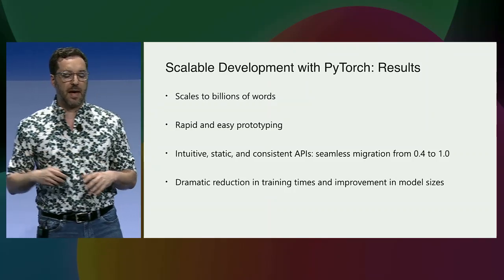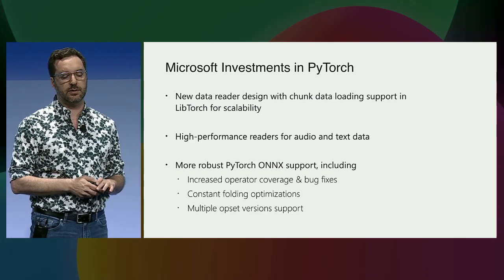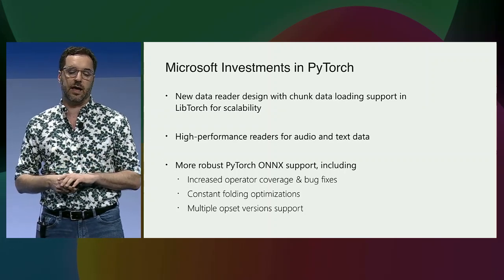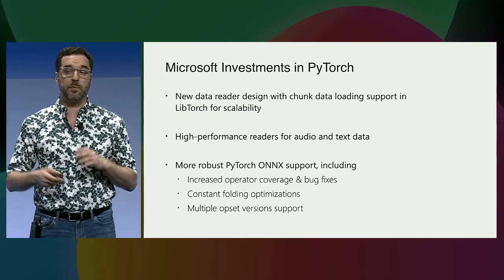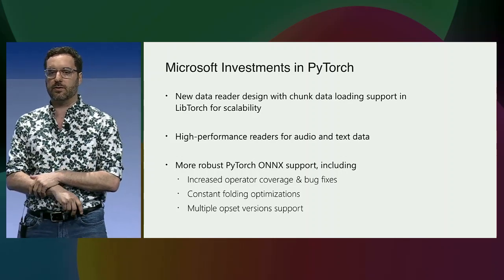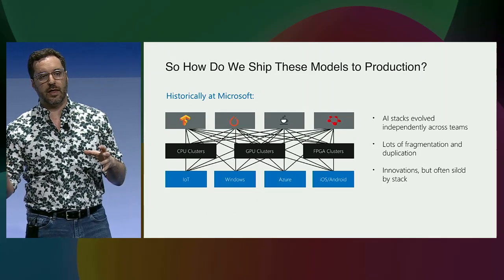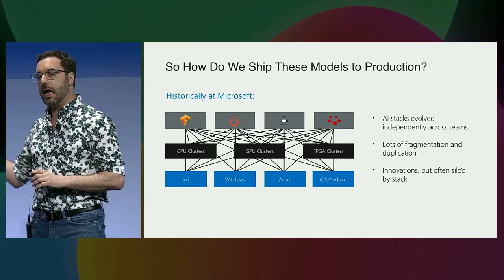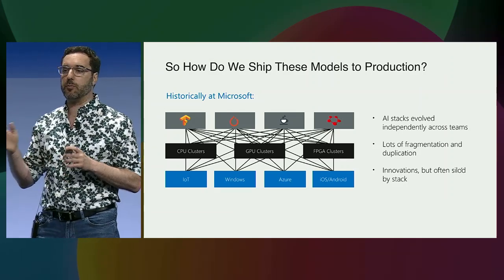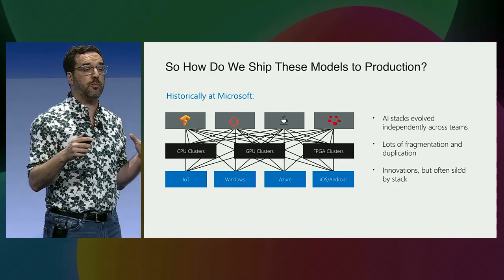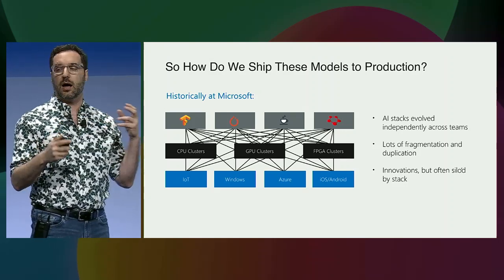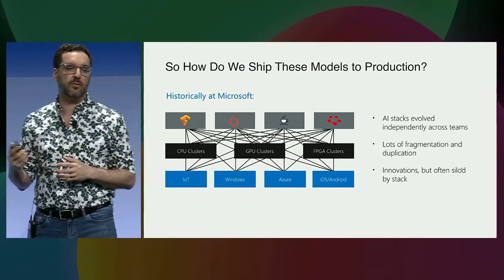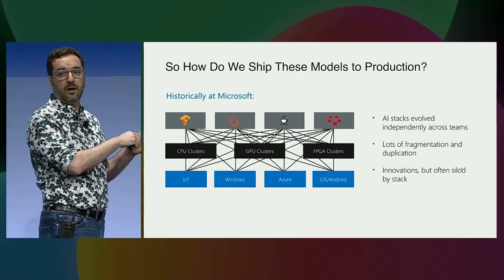We've seen a dramatic reduction in times and improvements in model sizes. You can see some of the ways that we have moved that content upstream into the native PyTorch repo for everyone to use. But beyond just PyTorch, we wanted to move this stuff to production very quickly. Previously, each group might spin up their own silo, which led to duplication and a huge amount of time to productionize, package, and move those things — making it very hard on our SREs and the people who had to support it.